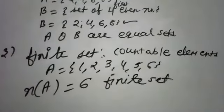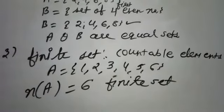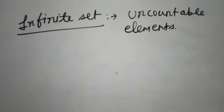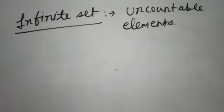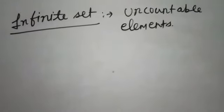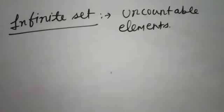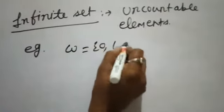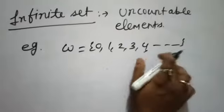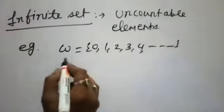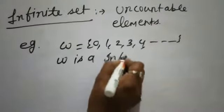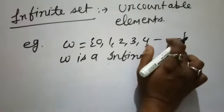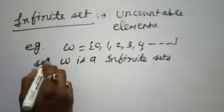Now come to our fourth point — infinite set. It is the opposite of finite set. Infinite set means a set is said to be an infinite set when it has uncountable elements; it means we cannot count the number of elements — that time, that set is called infinite set. For example, set W is the set of whole numbers. When we go through this set, there is no limitation, so it is infinite. We can say W is an infinite set because there is no limit up to which number we write.